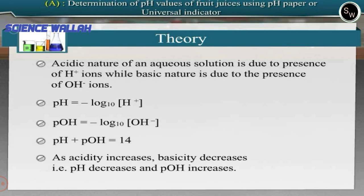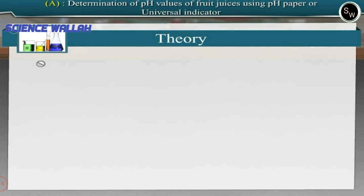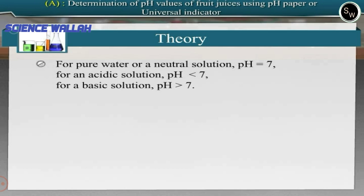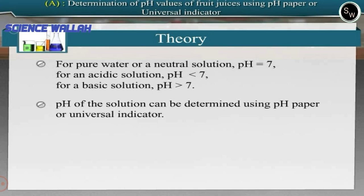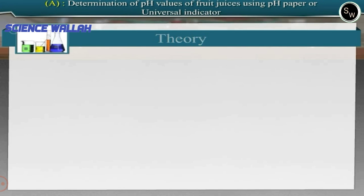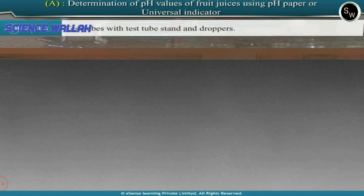As acidity increases, basicity decreases — that is, pH decreases and pOH increases. For pure water or a neutral solution, pH equals 7. For an acidic solution, pH is less than 7, and for a basic solution, pH is greater than 7. The pH of a solution can be determined using pH paper or universal indicator.